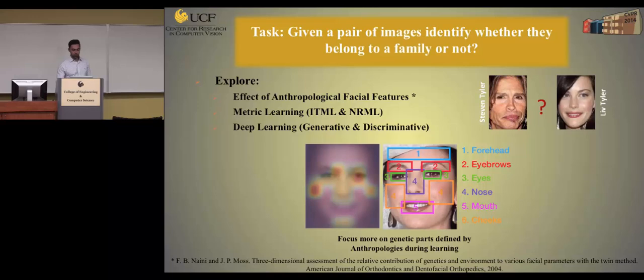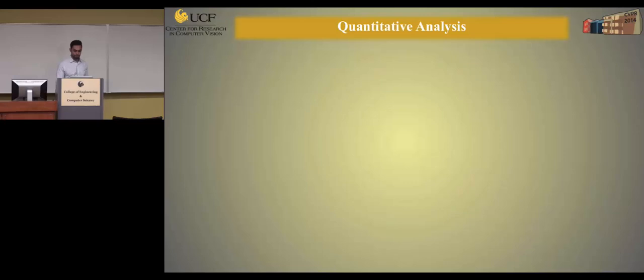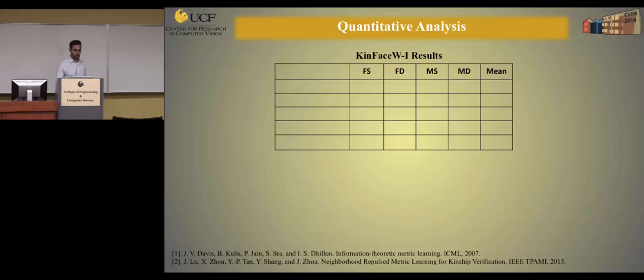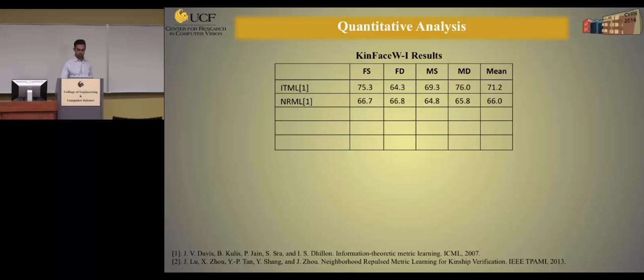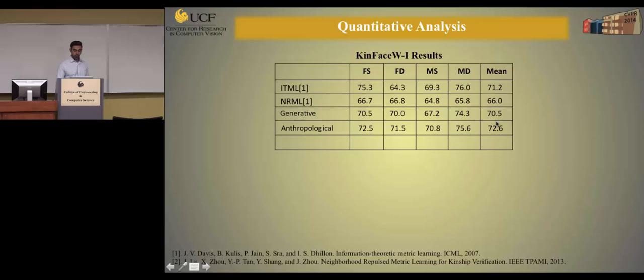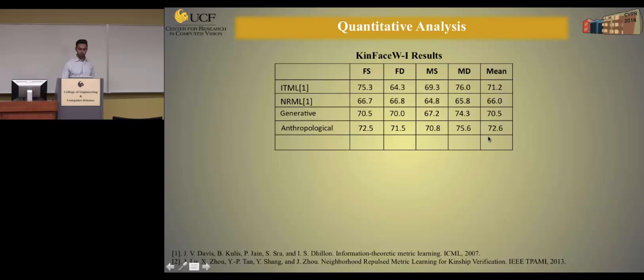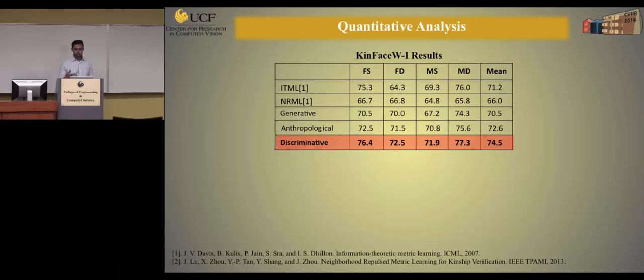We compared different components of our system — the generative and discriminative parts — against ITML and NRML on two datasets: KinFaceW1 and KinFaceW2. On KinFaceW1, results are shown for father-son, father-daughter, mother-son, mother-daughter, and average over all relationships. The generative part followed by SVM is one baseline. When we add the anthropologist-identified genetic features and focus more on those patches, we improve average performance by 2%. When we use the discriminative layer and let the computer find the most important patches, we further improve to 74.5%, outperforming all other methods.